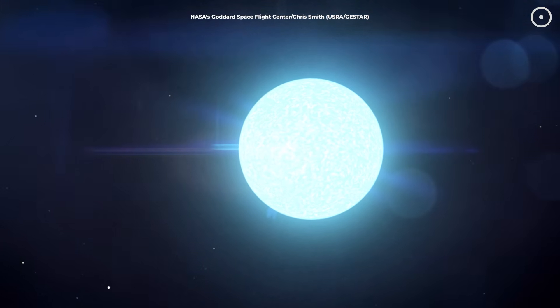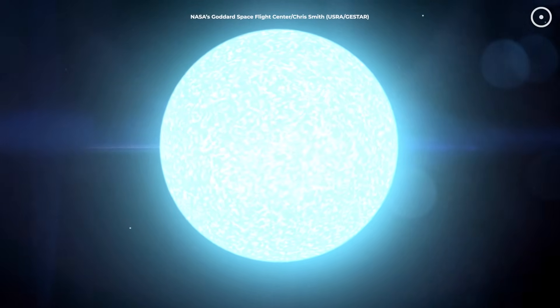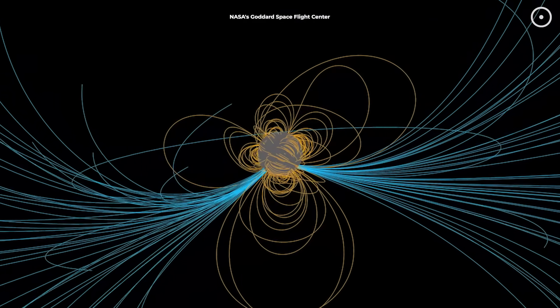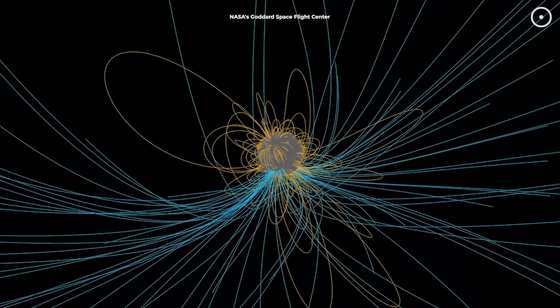But wait, let's put magnetars in perspective. These objects are so extreme that they break our normal ways of thinking about physics. A magnetar's magnetic field is so strong that it would be lethal to humans from 600 miles away.